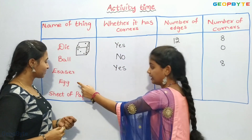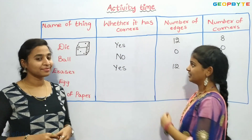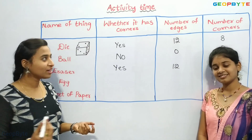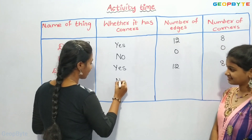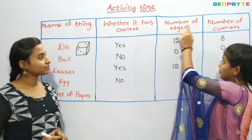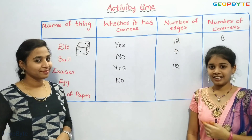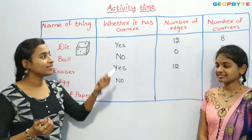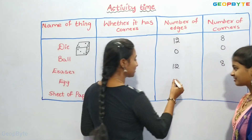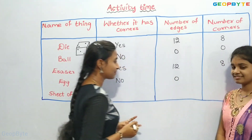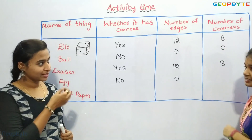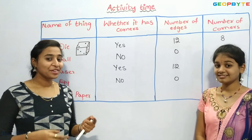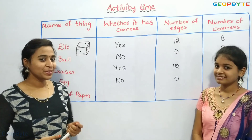Whether an egg has corners — no. An egg is oval in shape, so it doesn't have corners. The number of edges for an egg is zero, since it is oval. The number of corners for an egg is also zero, since there are no edges.